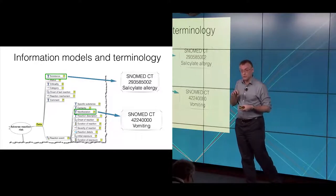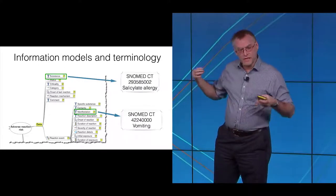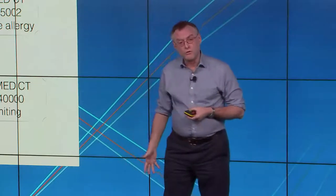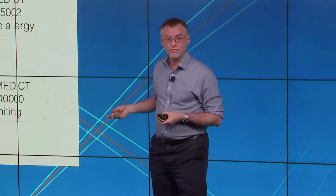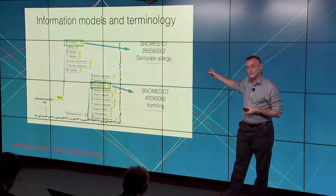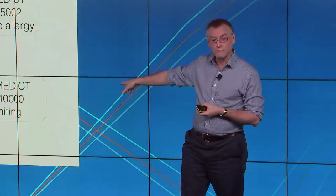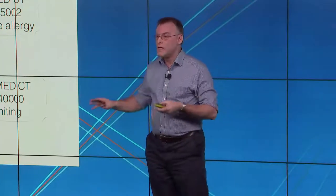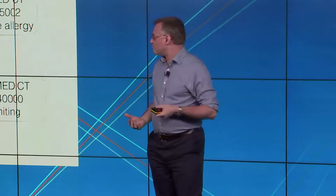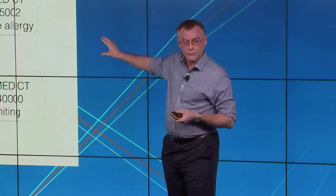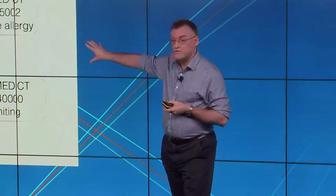Fundamentally, they are trying to solve slightly different problems, and left to their own primary use case — their own best fit — they actually play very nicely together. So in this information model, which is an allergy, there are at least two absolutely critical key points where terminology has to play this game. One is: what's the name of the substance — what is it that you were allergic to? Salicylates. And the other place is: what happened as a result? They got vomiting. You plug SNOMED into the information model. It's a long, complex discussion — the sort of thing that terminologists and informationists like me fight about over beers.